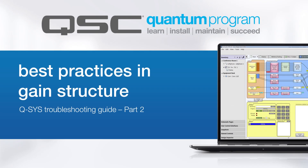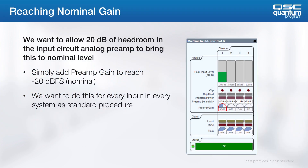Welcome back, let's pick up where we left off. Reaching nominal gain in Q-SYS is very simple. Plug in your signal and adjust the preamp gain until the input meter level reads about negative 20.